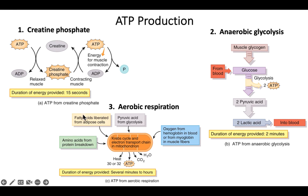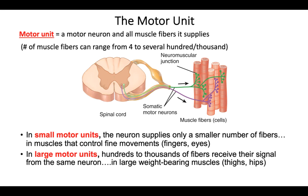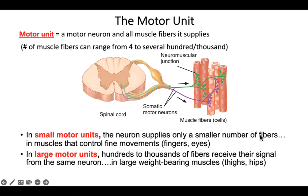The next topic is motor units. A motor unit is defined as one neuron and all the muscle cells it controls. Some neurons control just a handful of cells, while others control hundreds or thousands of cells at a time. Having a small motor unit — one neuron controlling just a handful of cells — gives you more control when you have many of them.